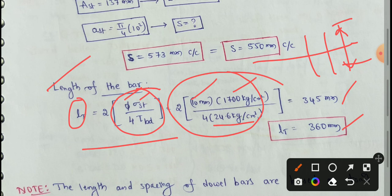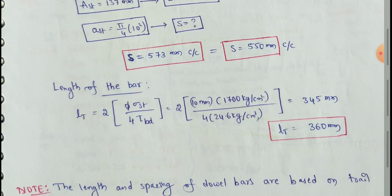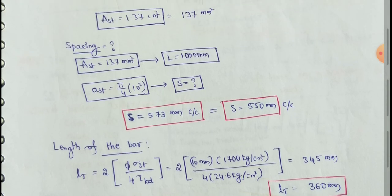So this tie bar has a length of 360 mm — we will convert as per design. If you like this video, please like and don't forget to subscribe to my channel. Thanks for watching.